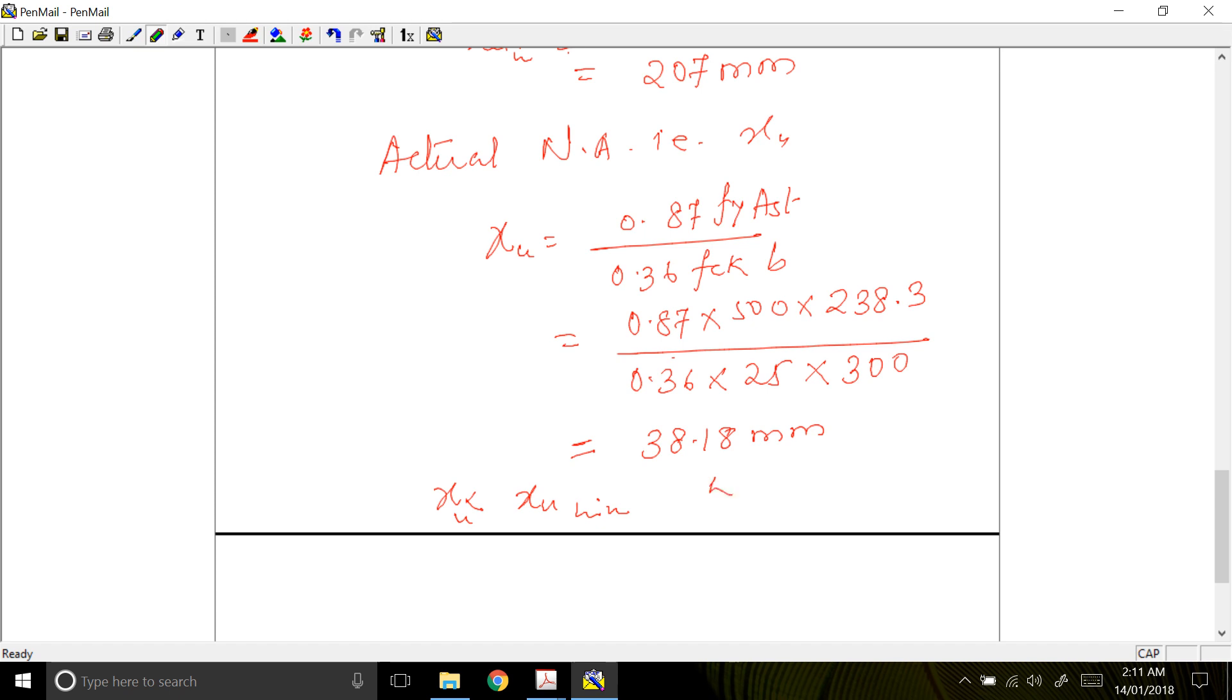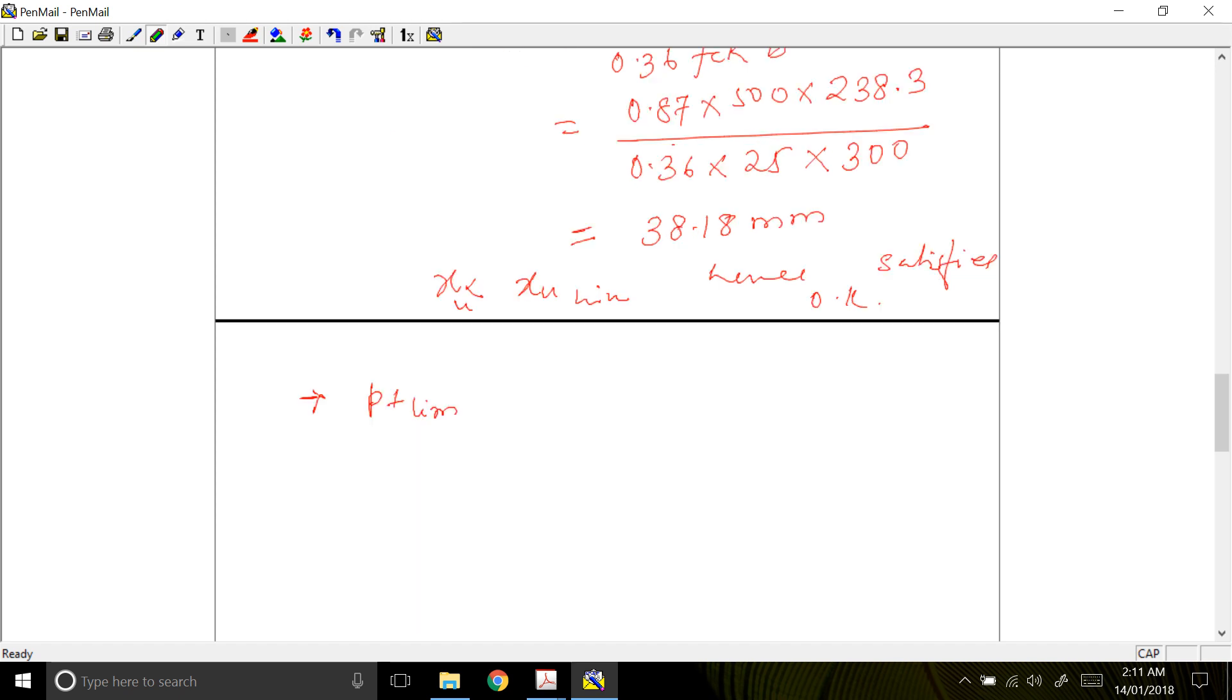Where the percentage Pt limiting should be greater than your percentage steel provided. We have a formula to calculate Pt limiting. Pt limiting by 100 is equal to 0.36 FCK upon 0.87 Fy times XU limiting upon D.